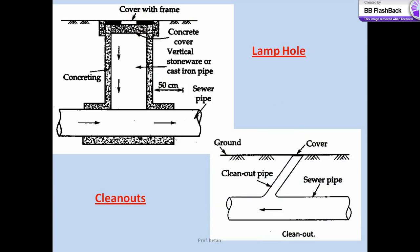Another appurtenance is the clean out. A clean out is an interlying pipe extending from the ground and connected to the underground sewer. A clean out is used for cleaning of a sewer pipe. It is generally provided at the upper ends of lateral sewers in place of manholes. The functioning of a clean out is simple: remove the top cover and force water through the clean out pipe to the lateral sewer, removing obstacles in the pipeline.